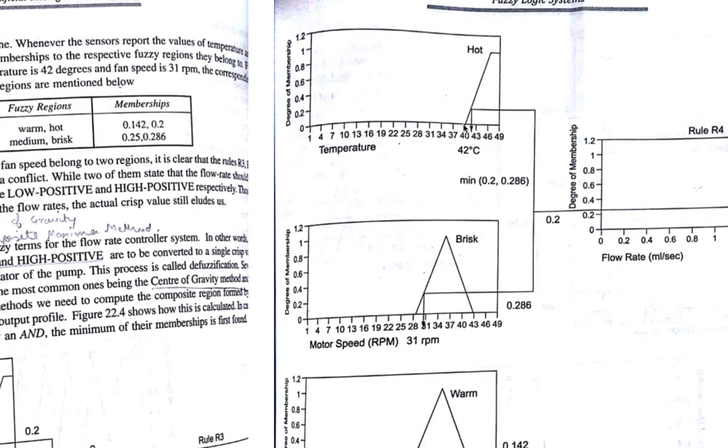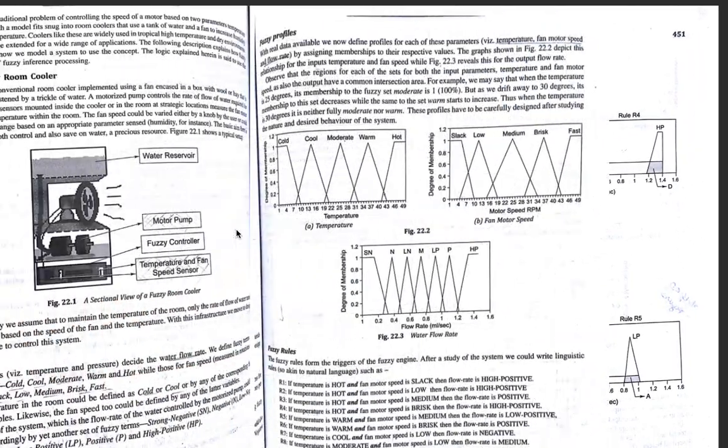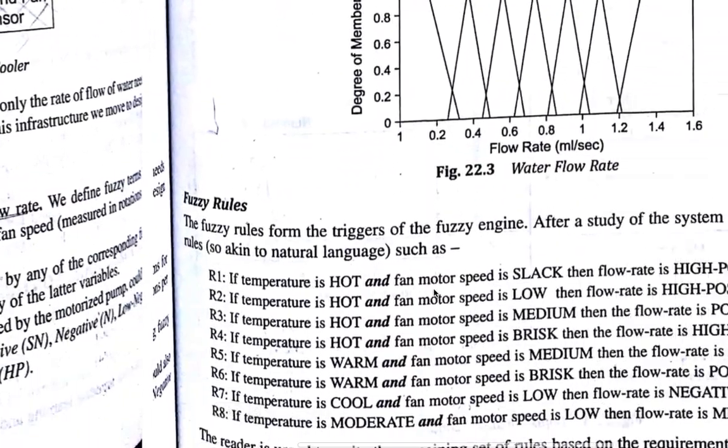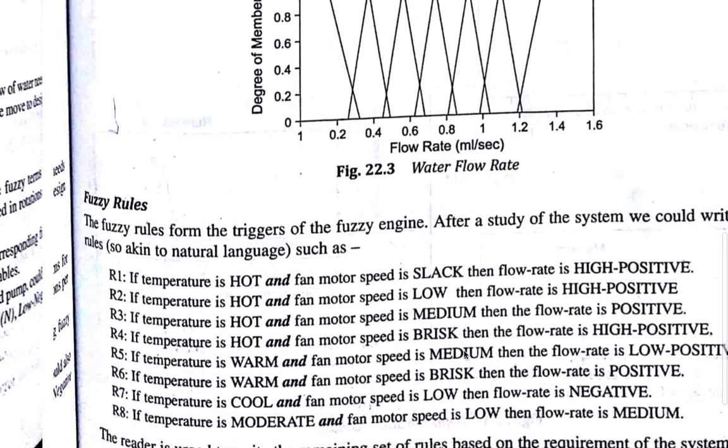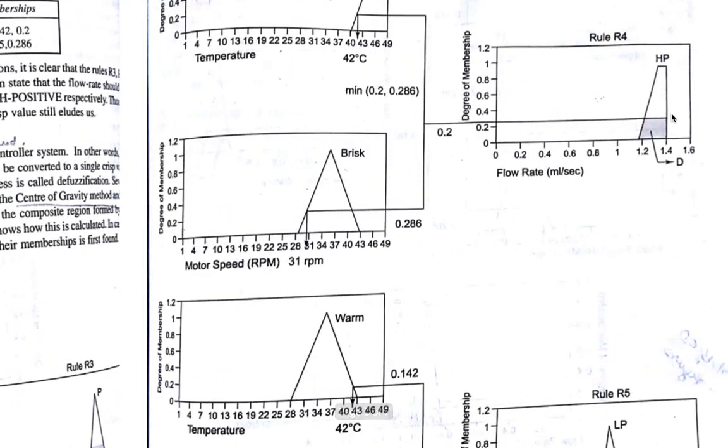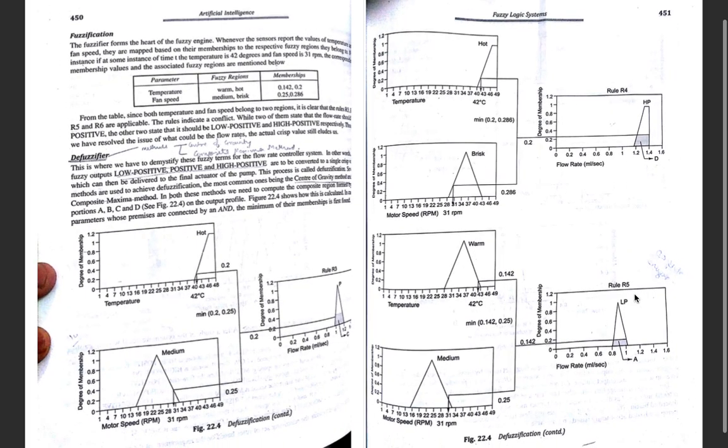Now, let's see other rules we have. If I apply R4 rule, the value of degree of membership I'll get is from the hot region, 0.2. From the brisk region, motor fan speed, I'll get 0.286. The area is this one, minimum of 0.2 and 0.286. Because R4 rule was also and rule. R4 rule, hot and fan motor speed is brisk. Then flow rate is high positive. The area is this. Similarly, applying R5 rule in the same way.